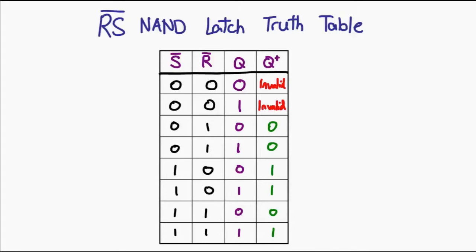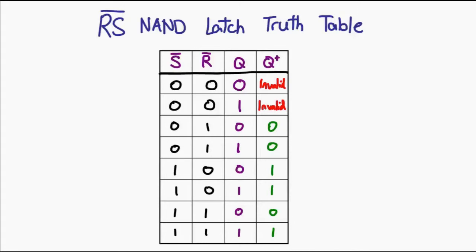The same goes for the truth table — the invalid condition is now where both inputs are zero. Similarly to the universal gates, all the wiring diagrams for the various latches and the stuff I'll cover in the next episode are fixed and you should be able to find them on places like Wikipedia and in textbooks, so don't worry too much about having to memorize these diagrams.